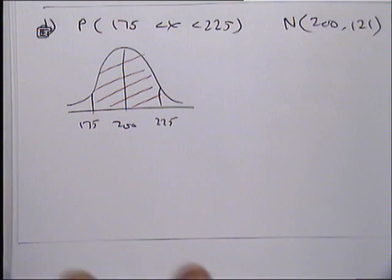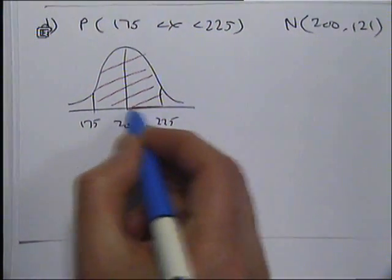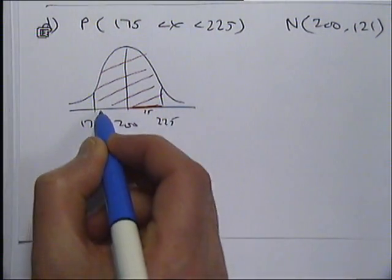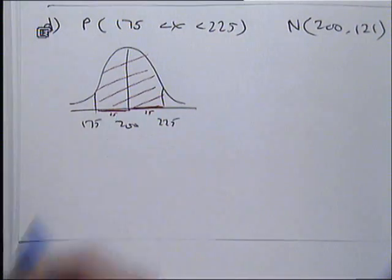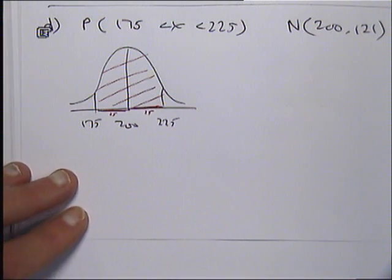Now, what can you spot that's happening here to do with the symmetry of this? It's the same either side. Because that is a distance of 25 and that is a distance of 25, this area here and this area here are the same.